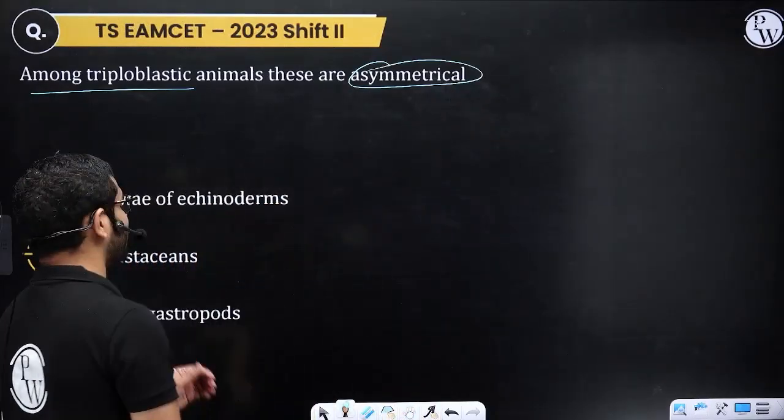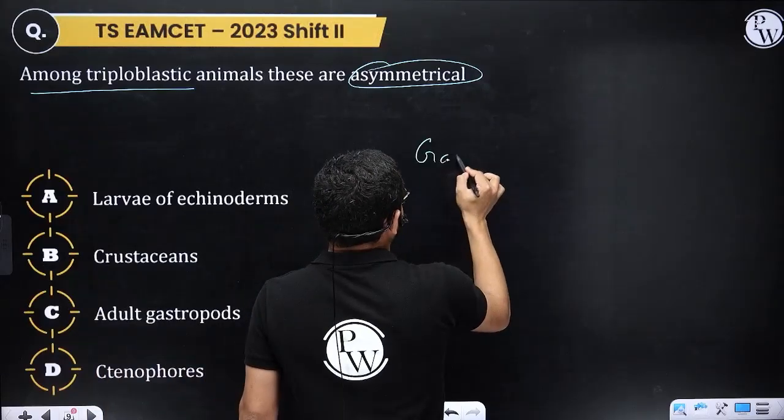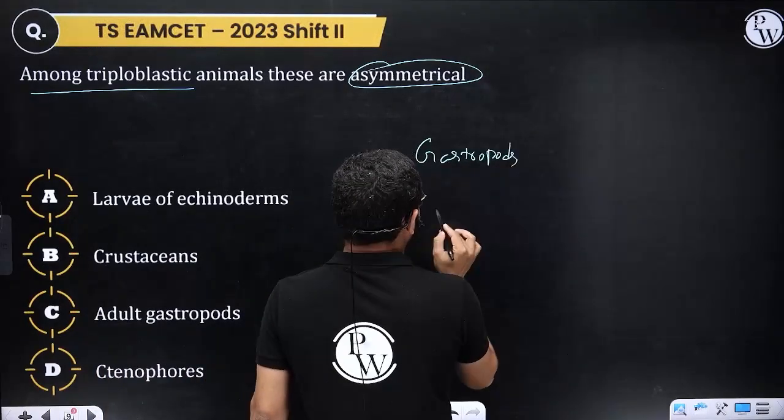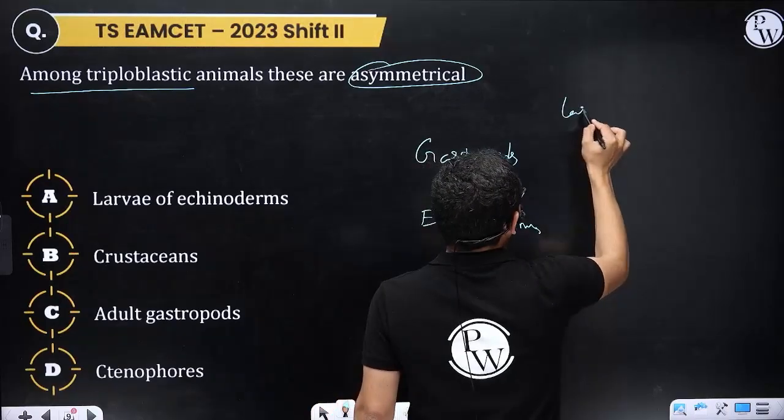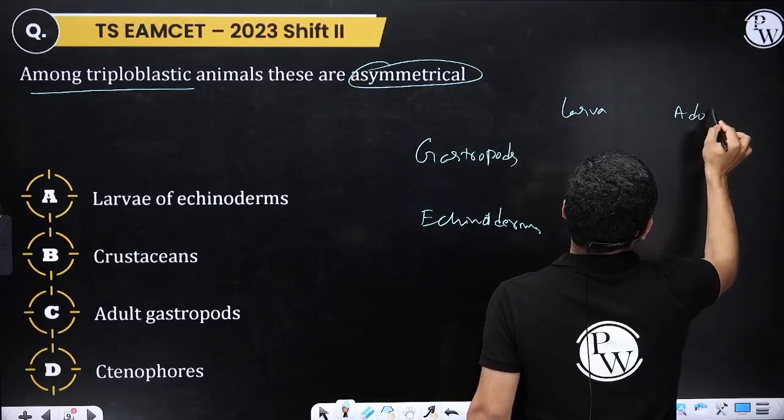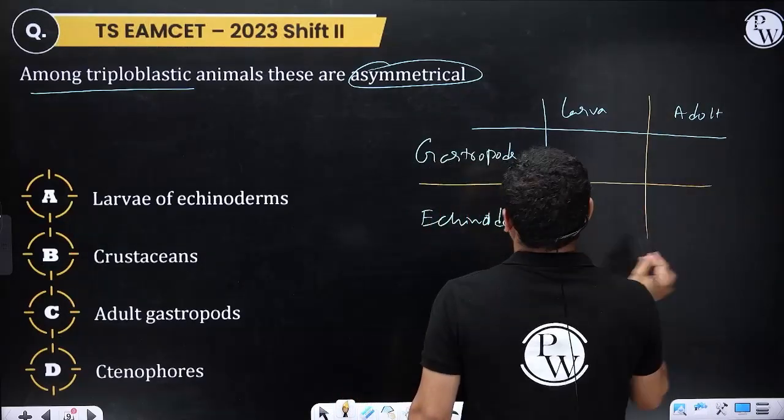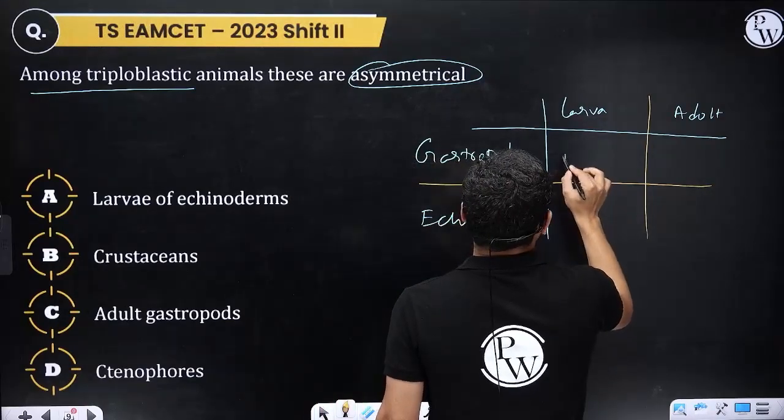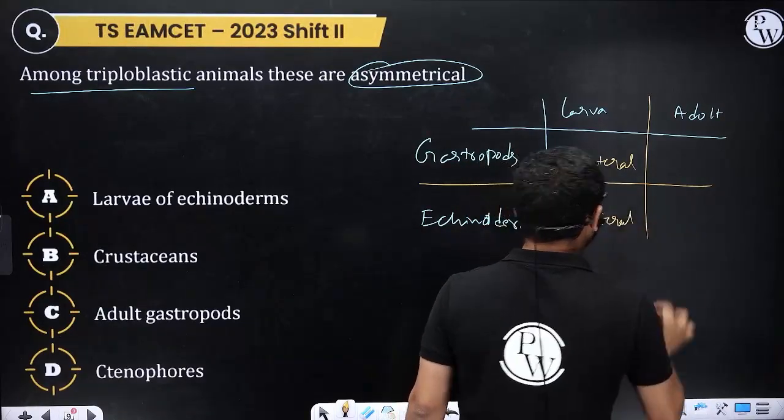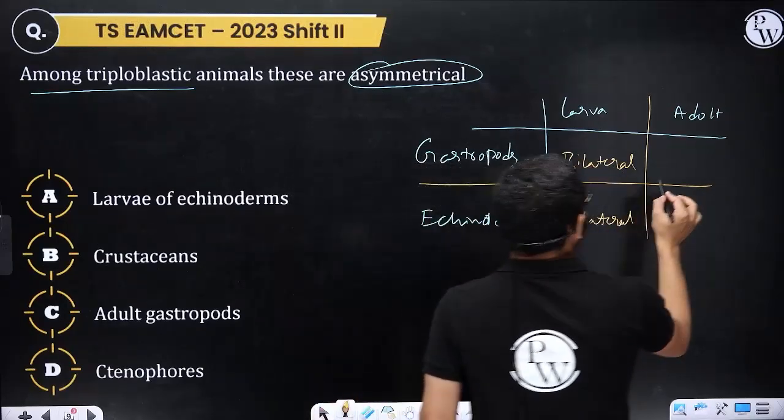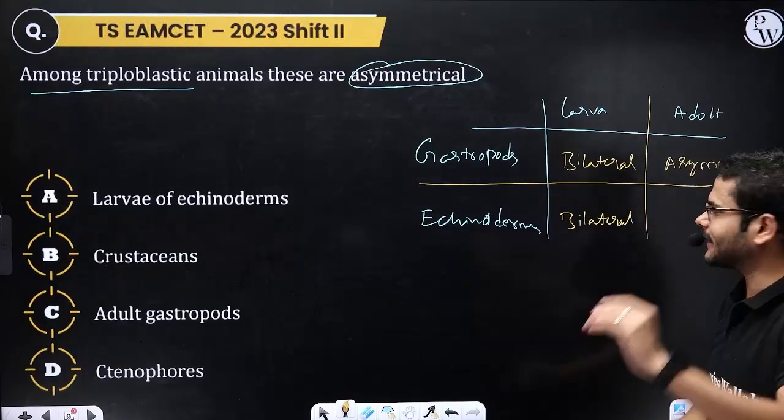Next question: Amongst triploblastic animals, which are asymmetrical? There are two exceptions. First one is gastropods and second is echinoderms. In both, the larval stage shows symmetry but the adult stage shows asymmetry. In gastropods, the larva shows bilateral symmetry and some adult stages also show bilateral symmetry.